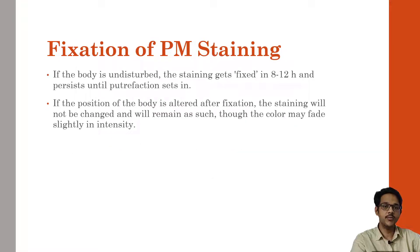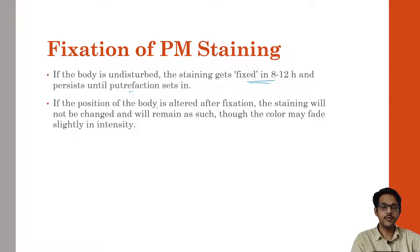Fixation of post-mortem staining: if the body is undisturbed, the staining gets fixed in 8 to 12 hours and persists until putrefaction starts. If the position of the body is altered after fixation, the staining will not change and will remain as such, though the color may fade or become slightly reduced in intensity.